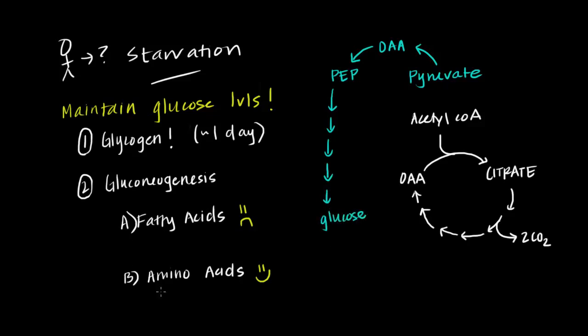Now here's the reason why amino acids can contribute to this pathway of gluconeogenesis but fatty acids can't. It turns out that the catabolism, the breakdown of amino acids, allows these breakdown products to be turned into some of the intermediates along the Krebs cycle.